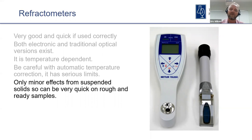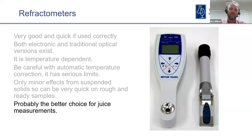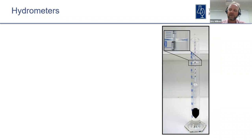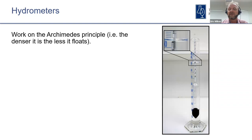Be careful with automatic temperature correction — it has very serious limits. A nice thing about refractometry is that suspended solids don't have very much effect on the measurement, because you're only measuring right at the interface of the instrument and the liquid, not trying to shine a beam of light all the way through. For juice measurements, refractometers are probably the best choice because they're quick, convenient, and not greatly affected by solids.